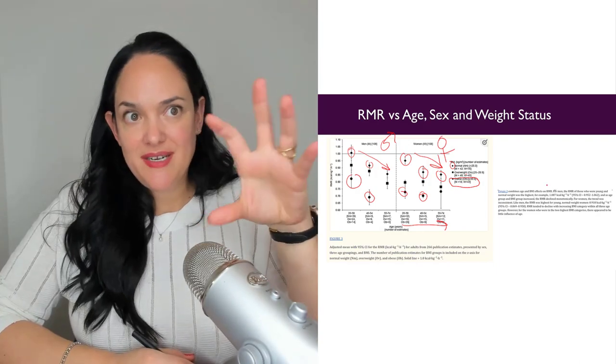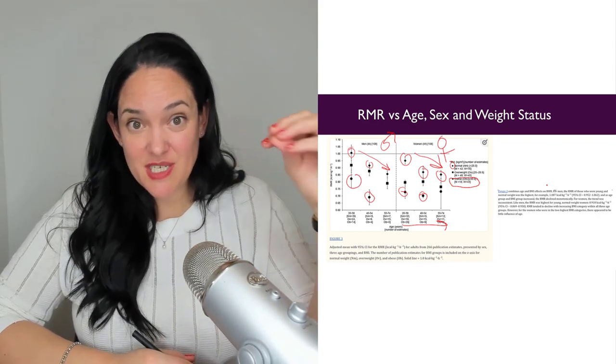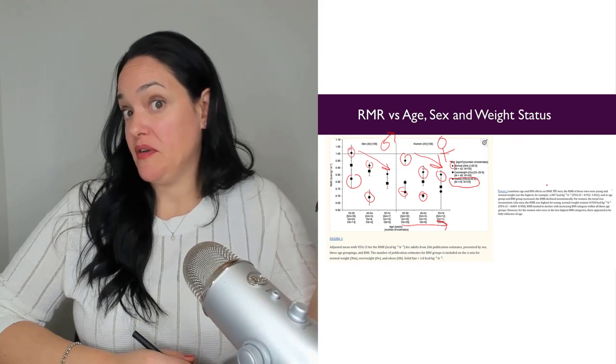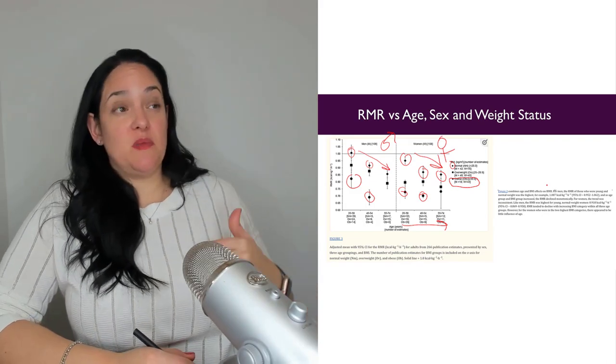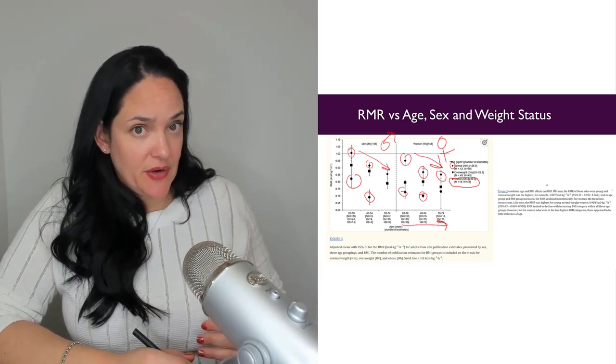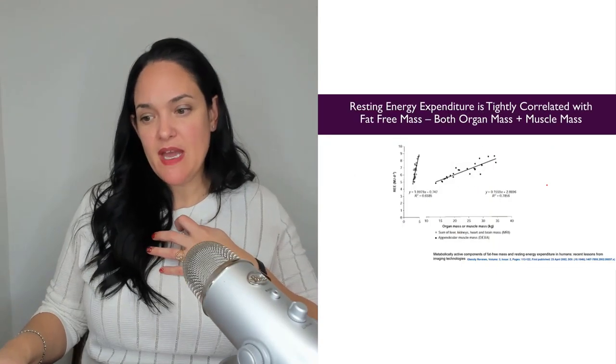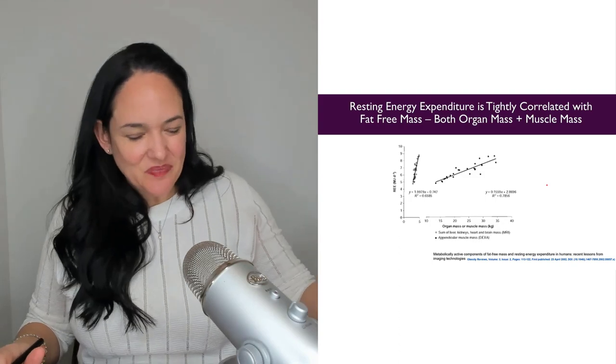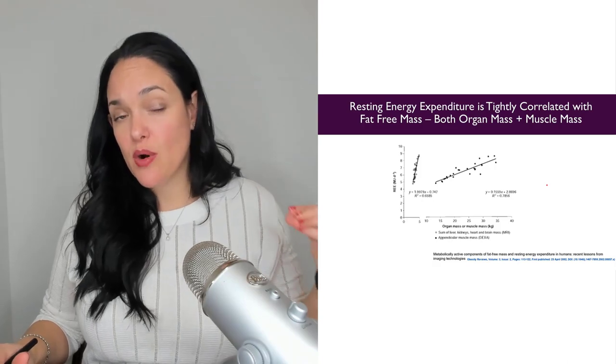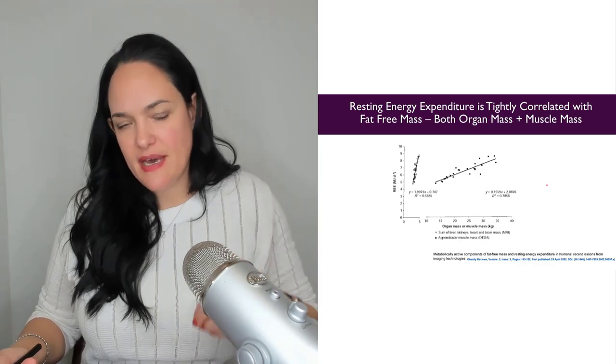So since RMR is such a huge component, 60 to 75% of energy expenditure, such a huge component of energy expenditure and energy balance, what do we do about it? It makes sense that someone with a higher RMR, they're going to burn more calories and have a propensity to be leaner. But how do I as an individual increase my resting metabolic rate? Now you might say, well, you build muscle, and that is true. Muscle is part of our lean body mass and it is more metabolically active than adipose tissue. It burns more calories per hour than adipose tissue.